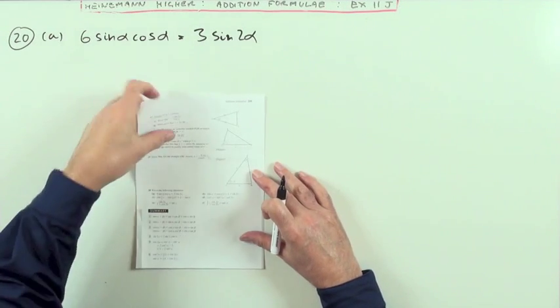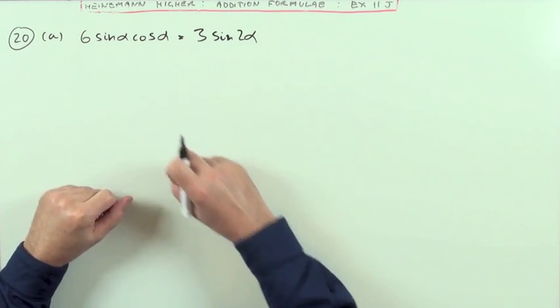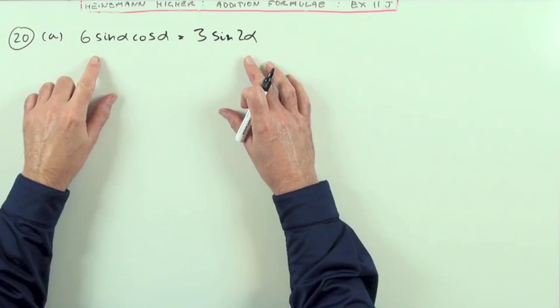Question 20, identities. Identities, that doesn't mean you've got an equation where there's only one value or a couple of values of alpha that works. That means it's true for all.